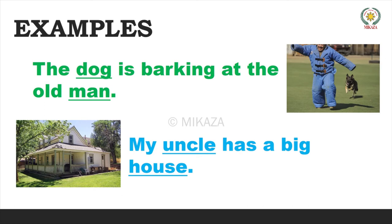The second example is: 'My uncle has a big house.' Uncle is a common name — it's ordinary. But if you specify, for example, Uncle Elvin, then it would become a proper noun because you've given it a special name. Similarly, house is just a general thing. If you said Mikasa's house, then Mikasa would be capitalized and become a proper noun. But here, uncle and house are common nouns. So dog, man, uncle, and house are all common nouns.